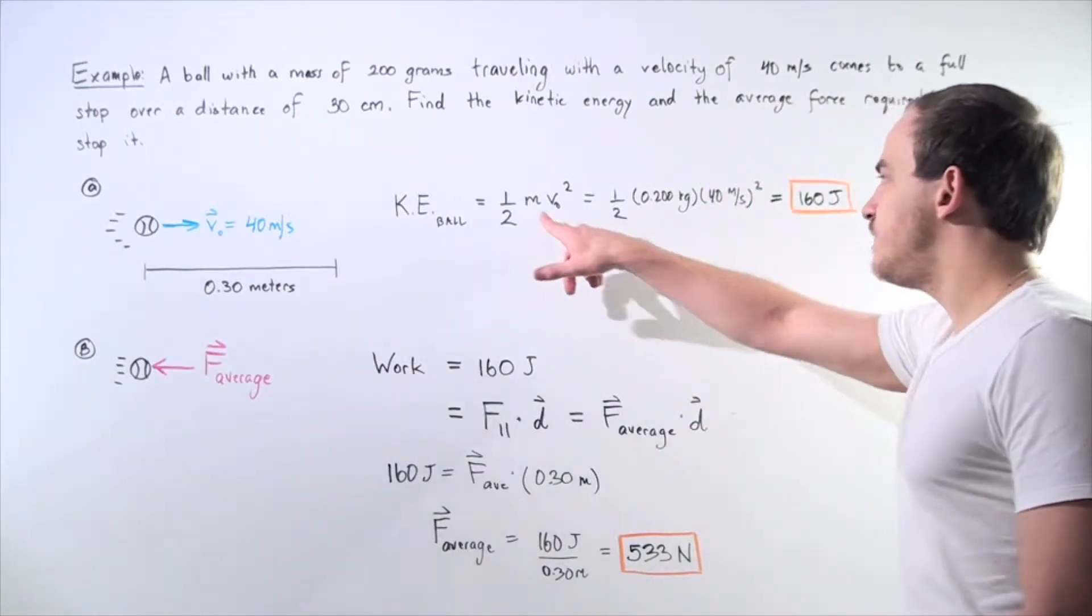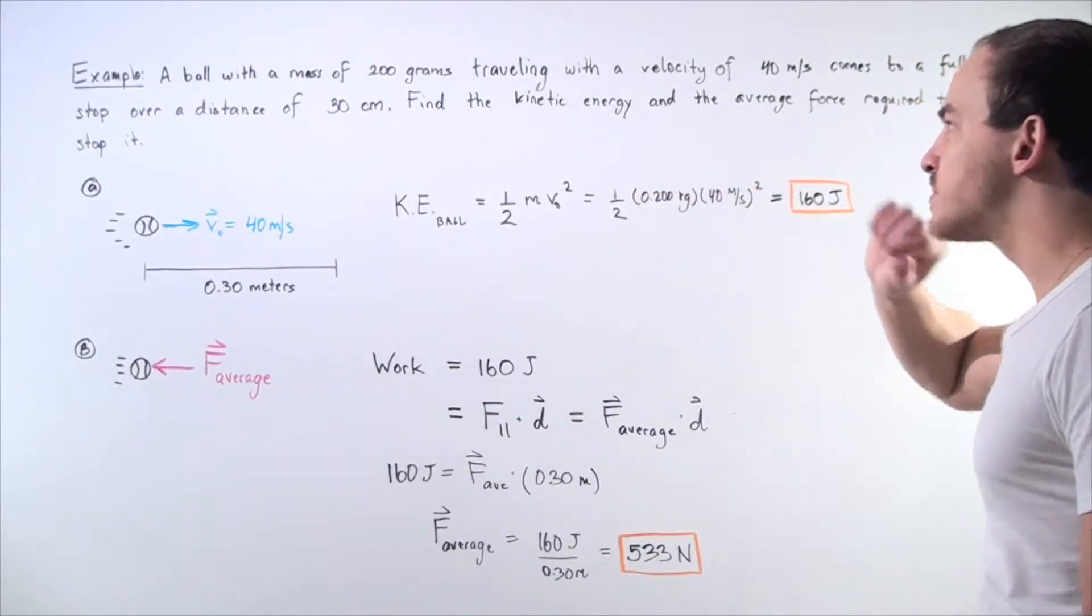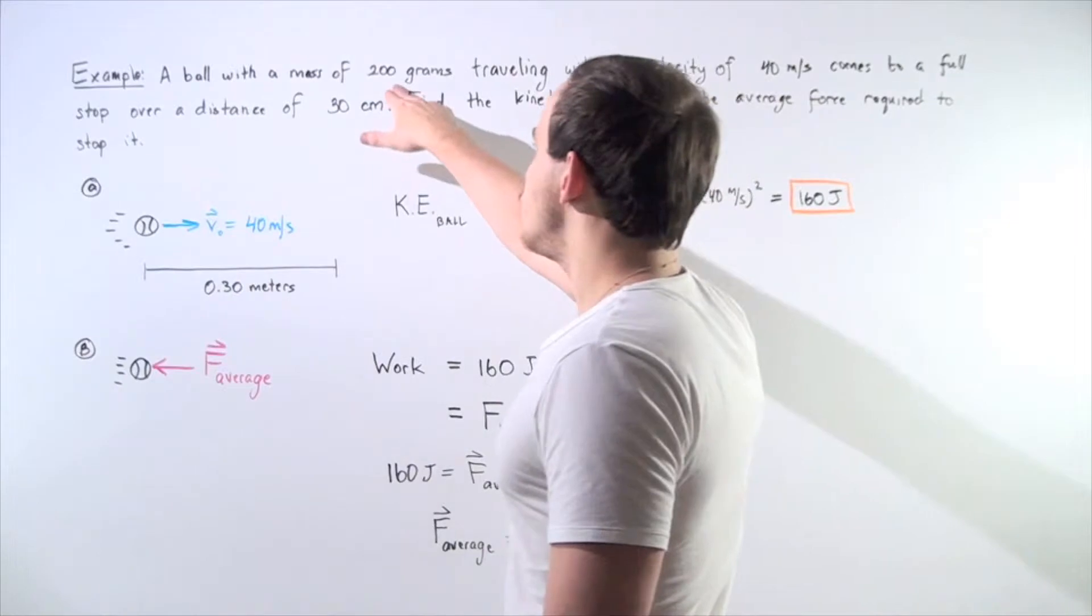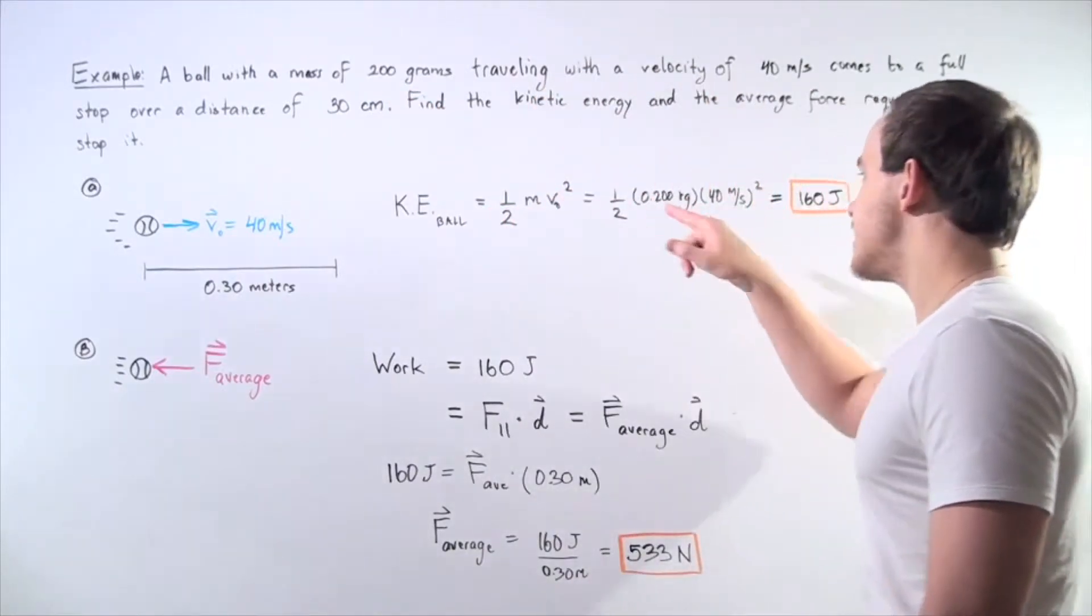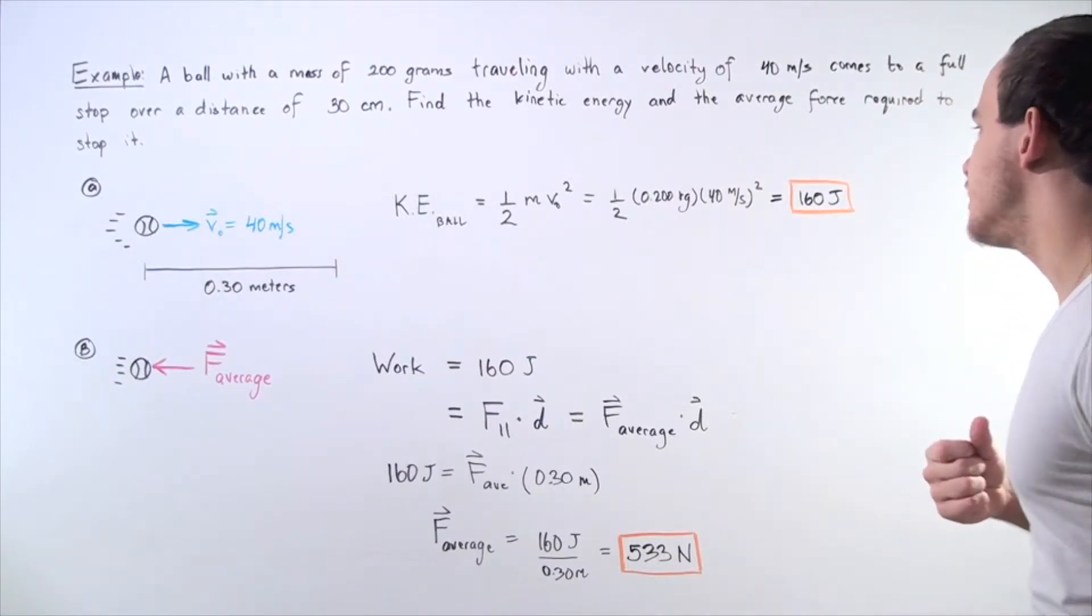We know V is 40 meters per second. We know our mass is 200 grams, but we want to convert it to kilograms. Divide 200 by 1000 and we get 0.2 kilograms.